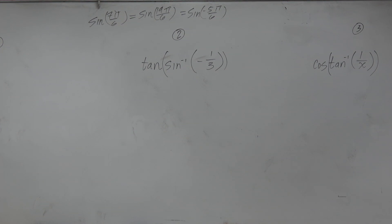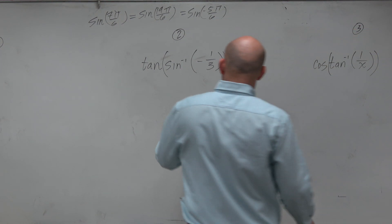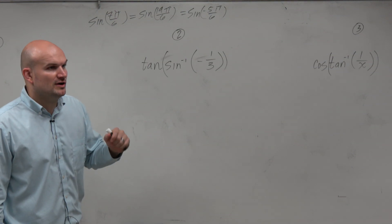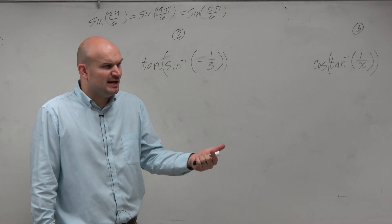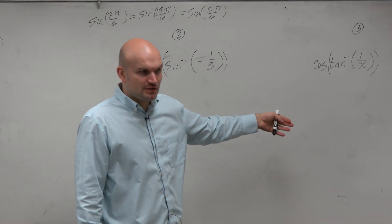In this example, we're doing a composition of functions. I look to do sine inverse of negative 1/3, and then I quickly come into a problem. I say, wait a minute, that point's not on the unit circle.